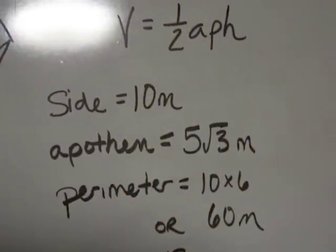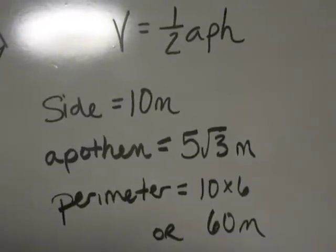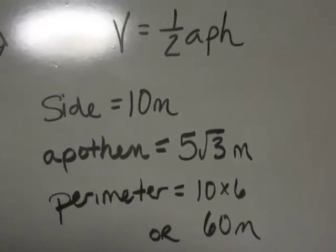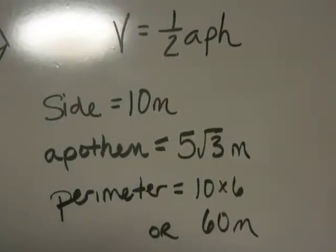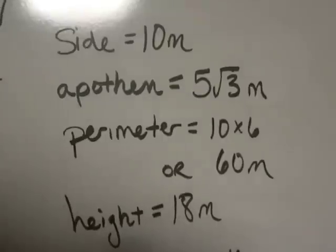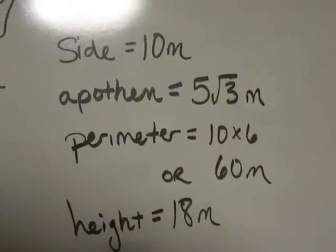The perimeter is found by taking the length of a side, which was 10, multiplying it by the number of sides, or 6, which is 60 meters. And the height of the prism was given as 18 meters.